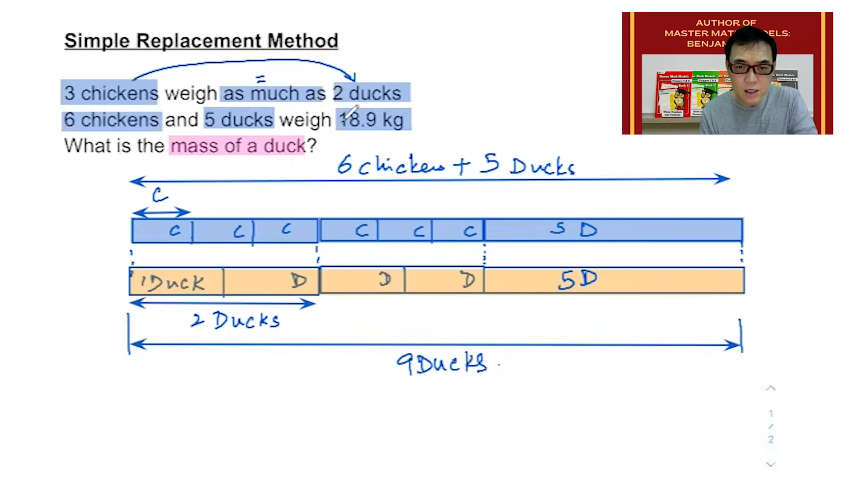Since they say that 6 chickens and 5 ducks weigh 18.9 kilograms, then let's put it in here and in here.